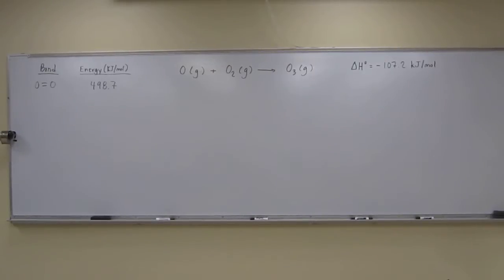Okay, so let's try this one. It says for the reaction that's pictured, oxygen plus molecular oxygen goes to ozone. The standard enthalpy of that reaction is negative 107.2 kilojoules per mole. Calculate the average bond enthalpy in ozone, or O3.